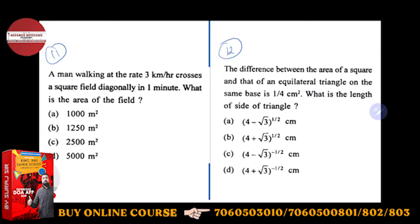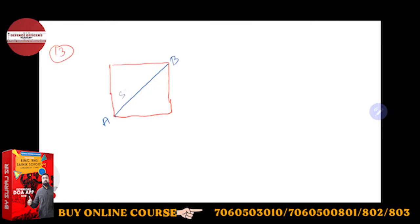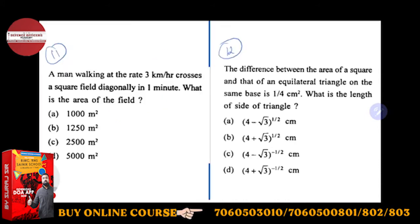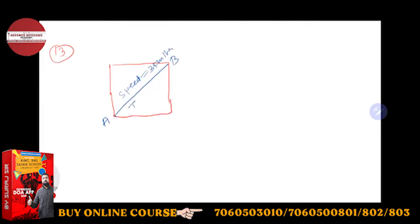He is crossing it and the speed is given to you. A to B, the speed is nothing but 3 km per hour. And time is also given to you, time is 1 minute. Then you have to find the area of the field. Time is 1 minute, so time is given, speed is given.